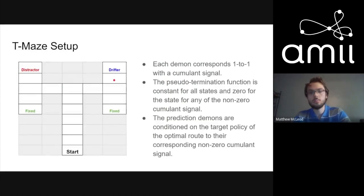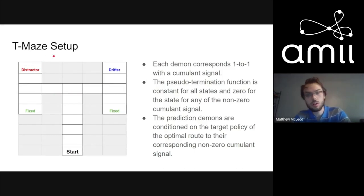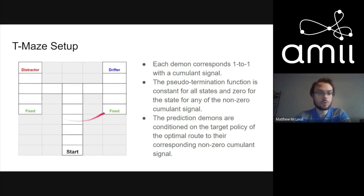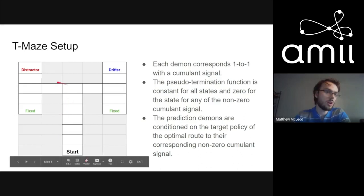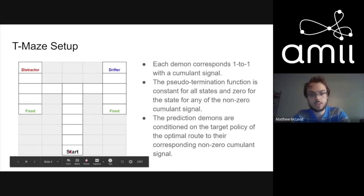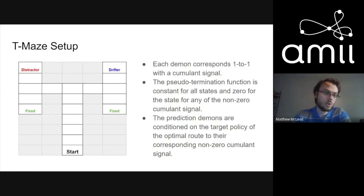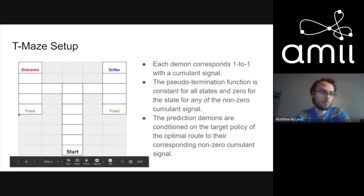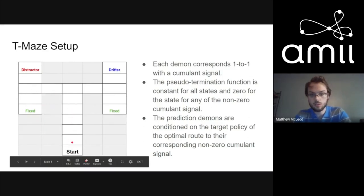To elaborate further, the collection of value function, policy, and pseudo-termination forms a mini learning agent we call a demon — one demon per signal. The pseudo-termination is constant zero when the agent reaches one of the terminating states and gets teleported back to start. The prediction demons are conditioned on the greedy path to their respective cumulant signal: greedy path to fixed, greedy path to distractor, greedy path to drifter, and so on.